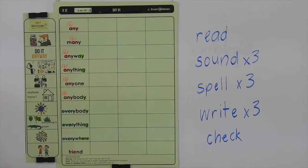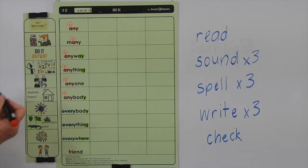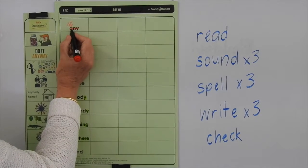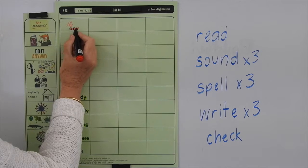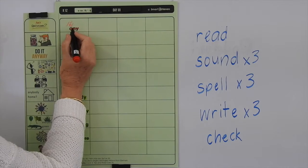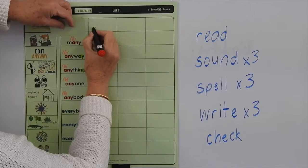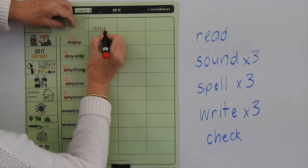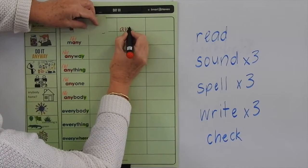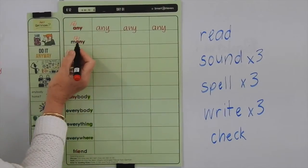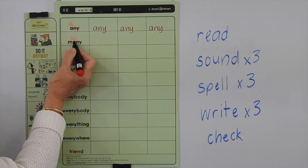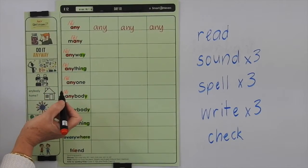Let's go back to read the word, sound the word, spell the word, write the word. So get your little bit of paper. We've got 'any' — A, N, Y. Cover it and write the word three times. You're really going to have to be thinking while you do this list, because remembering to write the A for that sound is a little bit tricky.